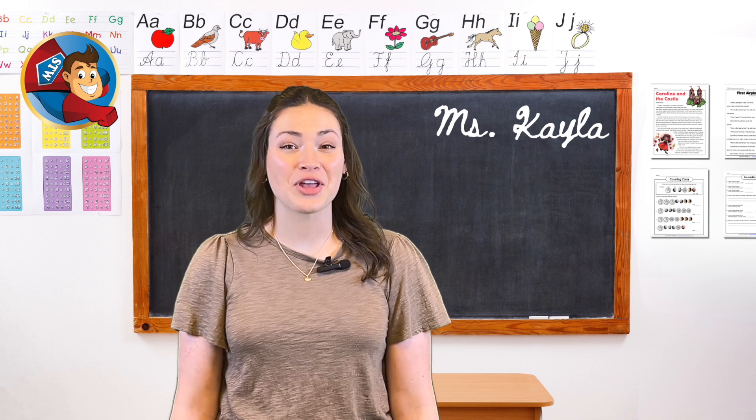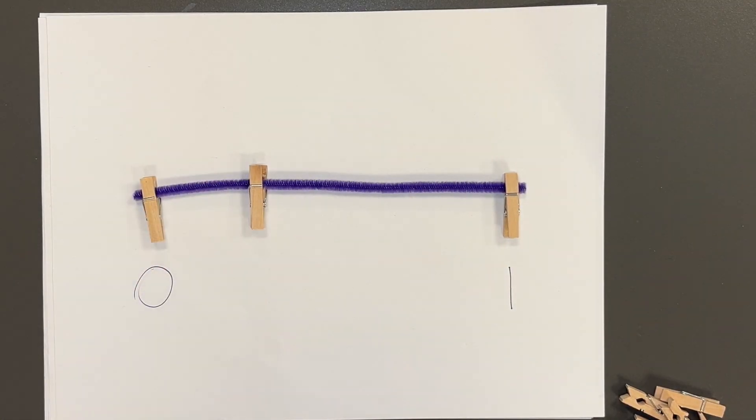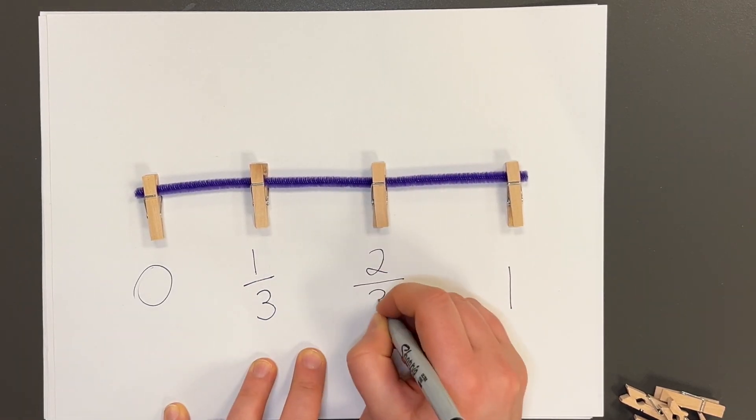Now students can create fractions on their own. Ask them to separate the number line into three equal parts by adding clothes pins and label the fractions along the number line.